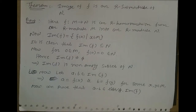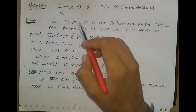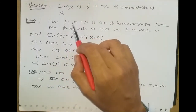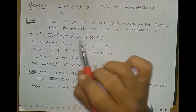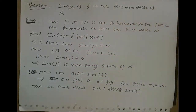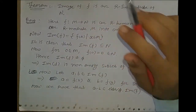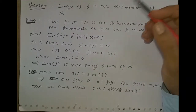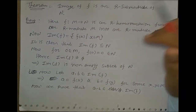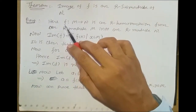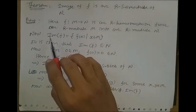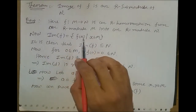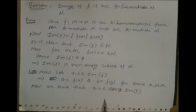The second theorem is: the image of F is an R-submodule of N. Note that ker(F) is an R-submodule of the domain M, while the image is an R-submodule of the codomain N. The proof is similar to that of ker(F). First we show that Im(F) is a non-empty subset of N, then we satisfy two conditions to be an R-submodule of N. Let F be an R-homomorphism from R-module M into R-module N. The image of F is the set of all F(x) where x belongs to M.